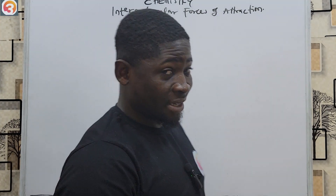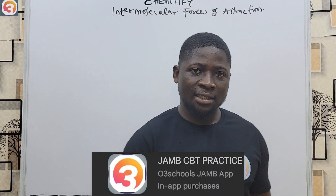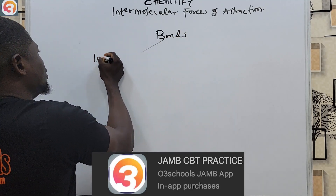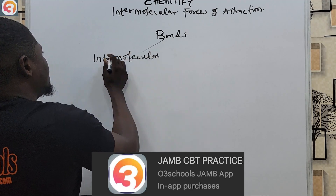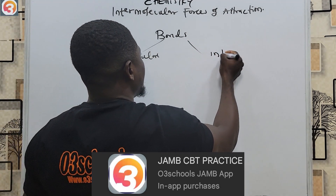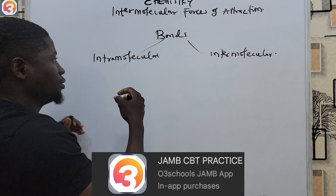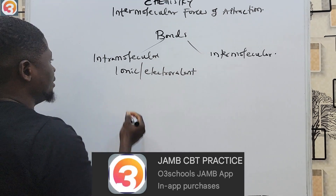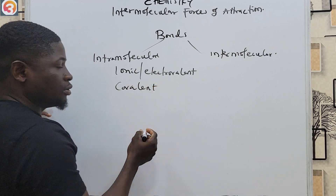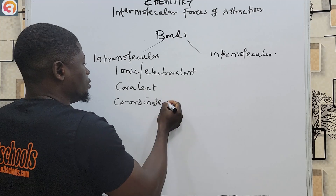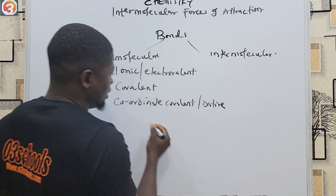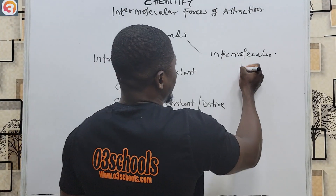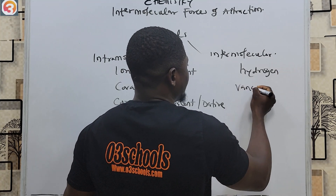In the introduction to this topic in previous episodes, we talked about intermolecular and intramolecular forces of attraction. For intramolecular forces, we discussed ionic bonds, covalent bonds, coordinate covalent bonds (also called dative bonds), and metallic bonds. For intermolecular forces, we covered hydrogen bonds, London dispersion forces, and van der Waals forces.